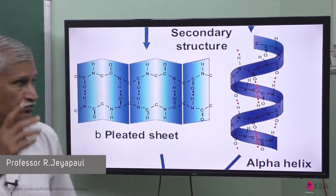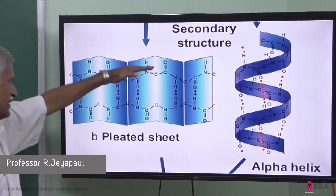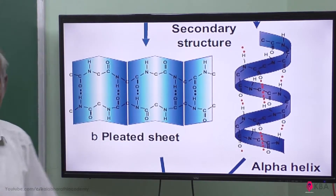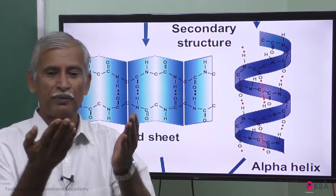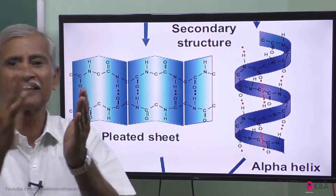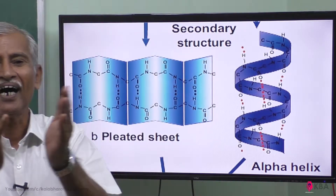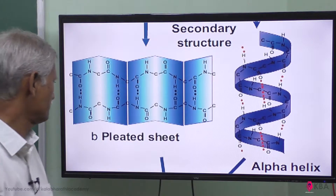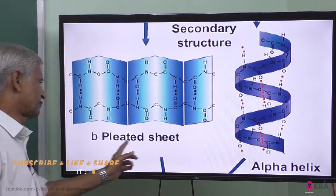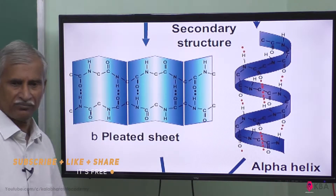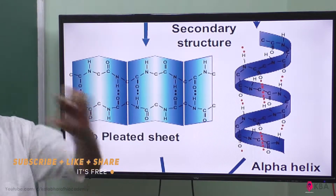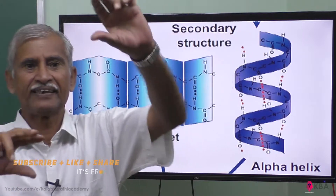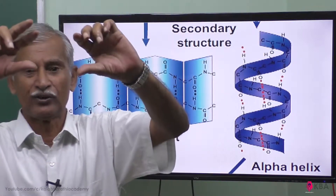Now, we have an amino acid and an amino acid. We have to use a paper in BCD. That is called a beta pleated sheet. Also, this one linear chain, this one linear chain, two linear chains.